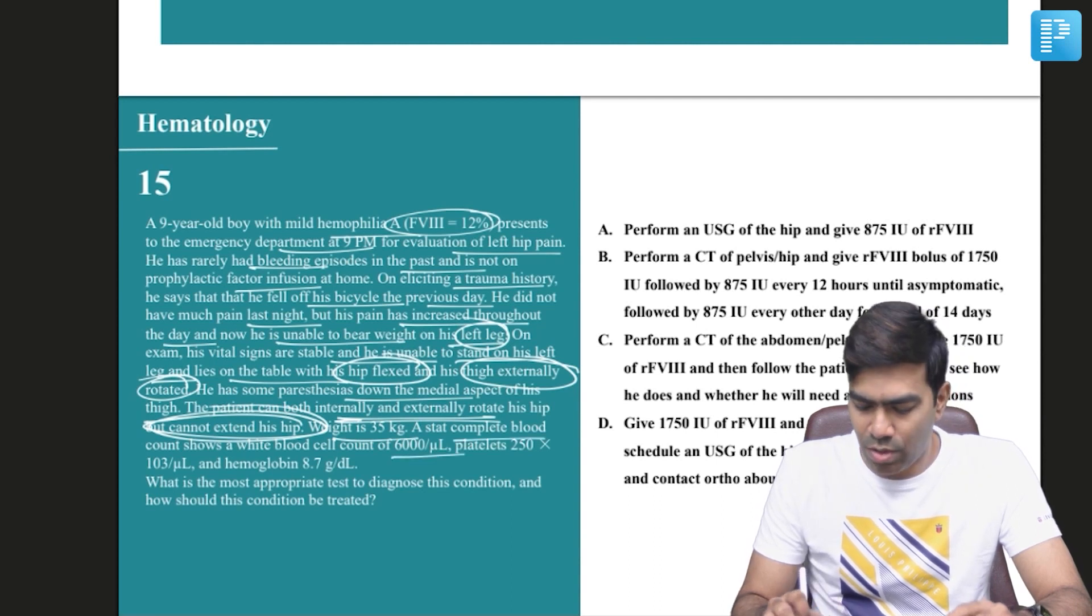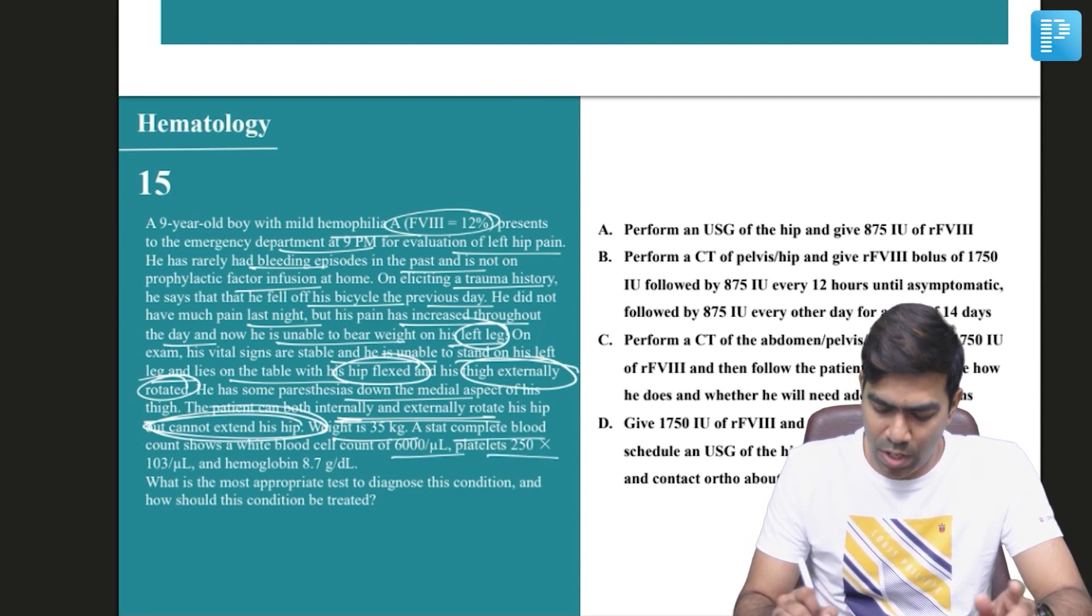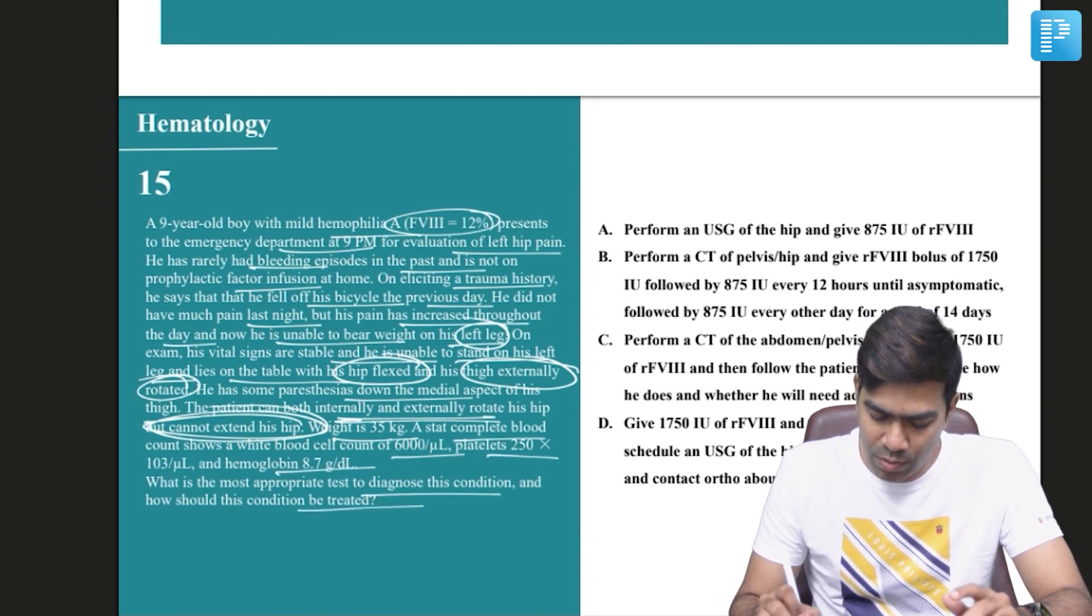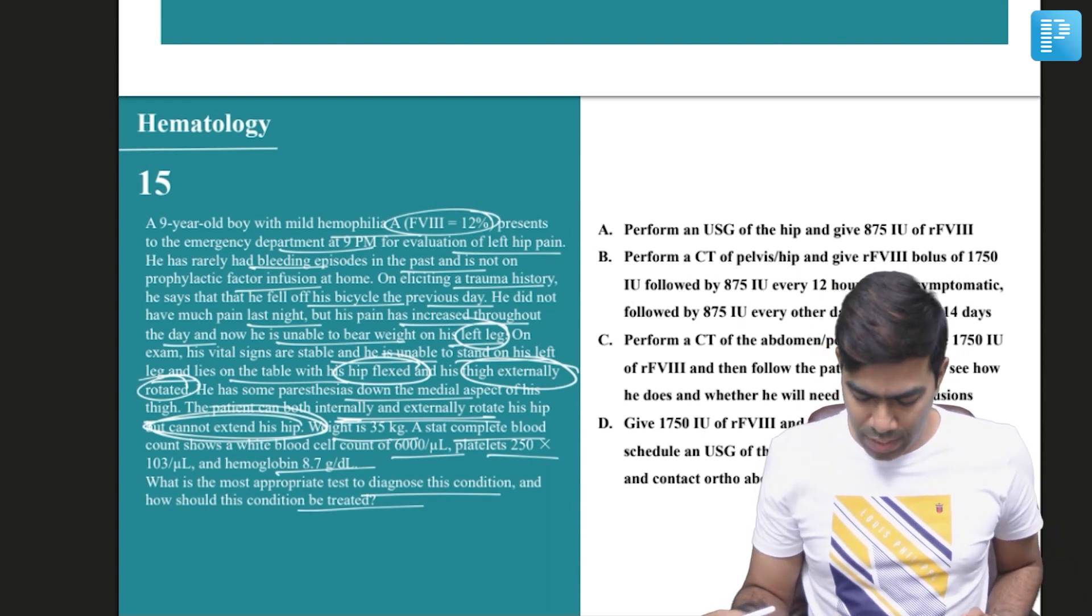A CBC shows a white blood cell count of 6,000, platelets 250,000, hemoglobin 8.7, probably because of bleeding. What are the most appropriate tests to diagnose this condition and how should this condition be treated?